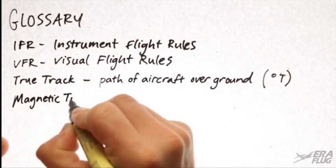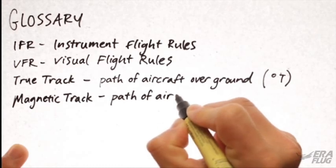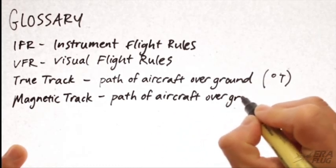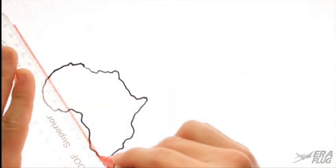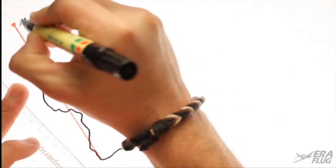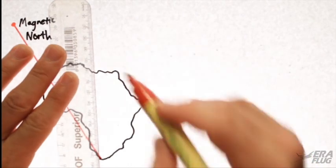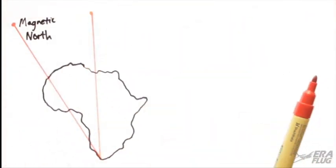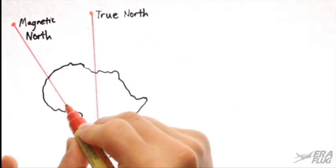Magnetic track, which is the flight path of the aircraft over the ground, measured in degrees magnetic and calculated from the true track. Remember, as pilots, we use a magnetic compass which is aligned to the magnetic north pole, which of course is different from the true north pole, meaning that we have an angular difference.